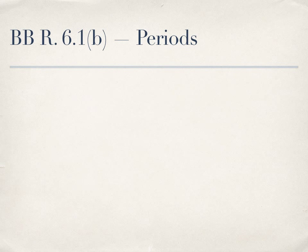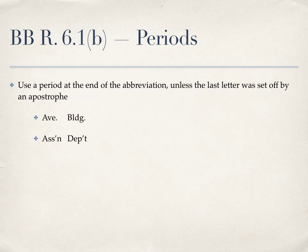Rule 6.1b tells you where to place periods when using abbreviations. Use a period at the end of any abbreviation unless the last letter of the abbreviation is set off by an apostrophe. Therefore, the abbreviations for Avenue and Building would end in a period, but the abbreviations for Association and Department would not. If in doubt about whether your abbreviation requires a period at the end, consult the table where you found the abbreviation. All four examples listed here were pulled from Table T6, starting on page 496.